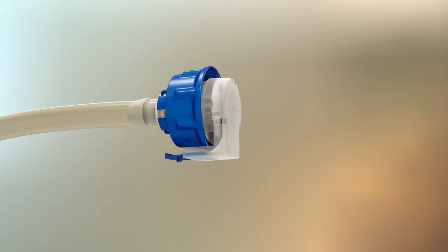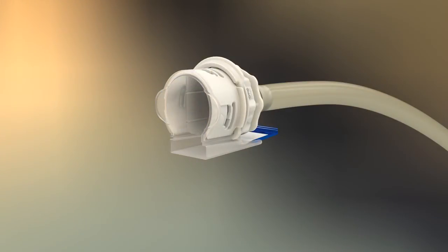The protective cap on the male insert is removed by lifting the bottom tab. The protective cap on the female body is removed by squeezing and pulling the side tabs.